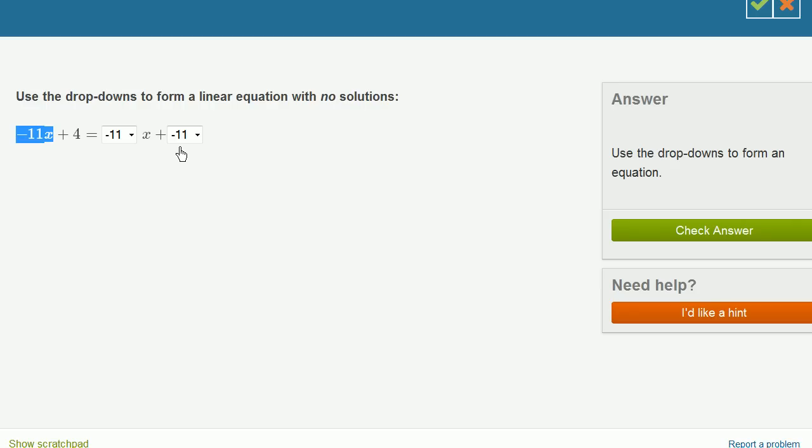Another way to think about it is here we have negative 11 times some number, and we're adding 4 to it. And here we're taking negative 11 times that same number, and we're subtracting 11 from it. So if you take negative 11 times some number, and on one side you add 4,